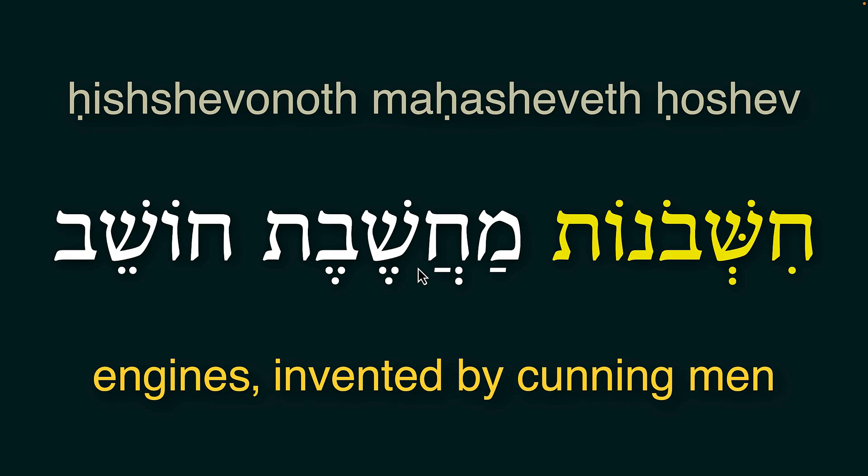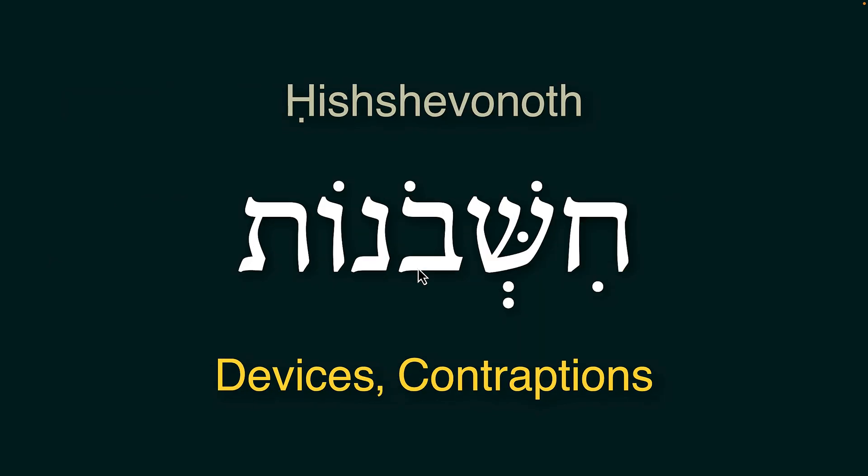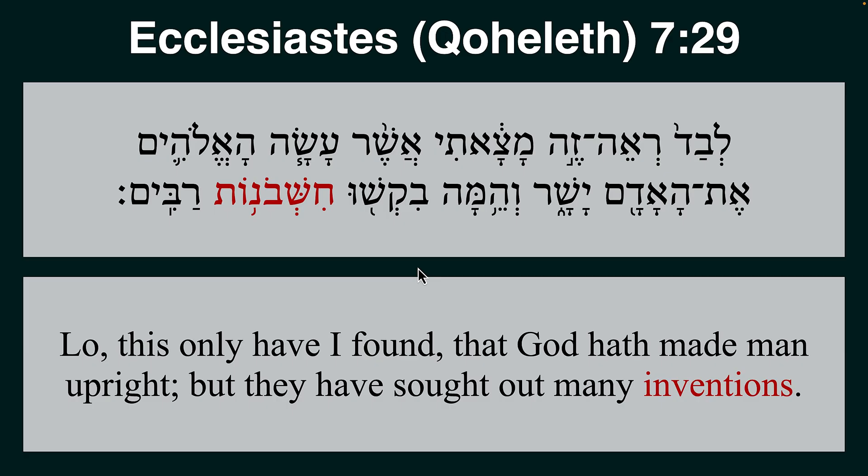Let's look at the first word, Khishavonoth. Khishavonoth means devices or contraptions. For example, an apple cutter is a nice little device which cuts the apple into four or six pieces and takes away the core. These are all little inventions we have in the kitchen, in the house — pliers and all those things we have in the modern world. They're all inventions made by clever people. Those are the devices and contraptions — Khishavonoth.